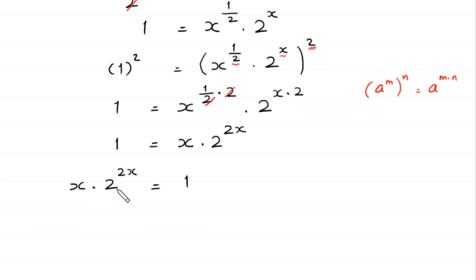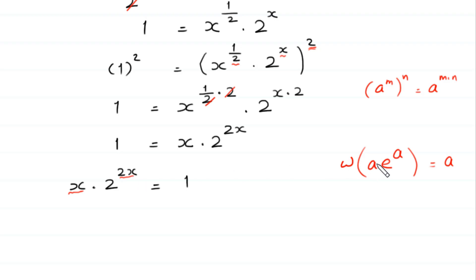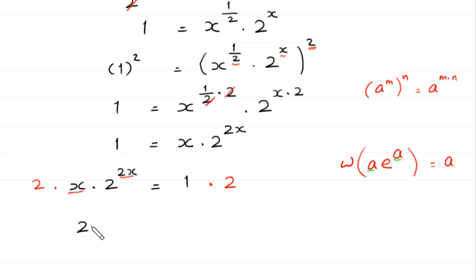Now we want to use the Lambert W function, where W of a times e to the power a equals a. To use it, we need the same expression in both places. Currently we have 2x in the exponent but only x as the coefficient. To make them match, we multiply both sides by 2, giving 2x times 2 to the power 2x equals 2.